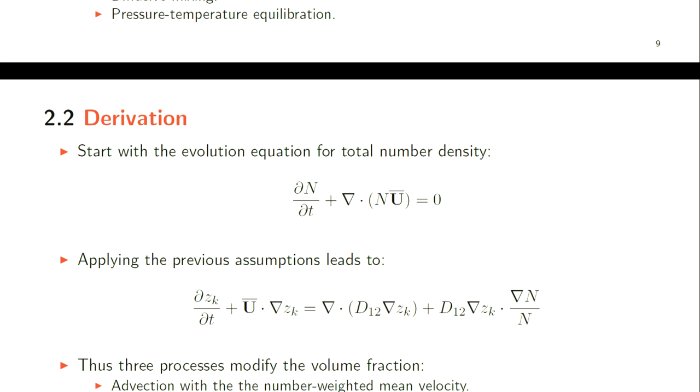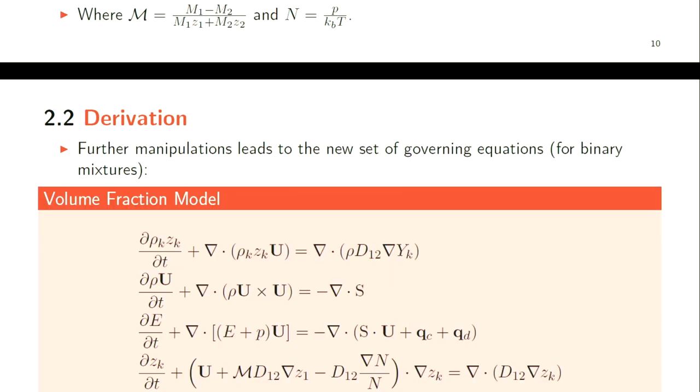I won't go through the full derivation here, but we start with the evolution equation for total number density of the mixture, then applying the previous assumptions we arrive at this equation here. This allows us to see there are three processes that modify the volume fraction of each species: advection with the number-weighted mean velocity, diffusive mixing in the second term, and this third term that arises from pressure-temperature equilibration.